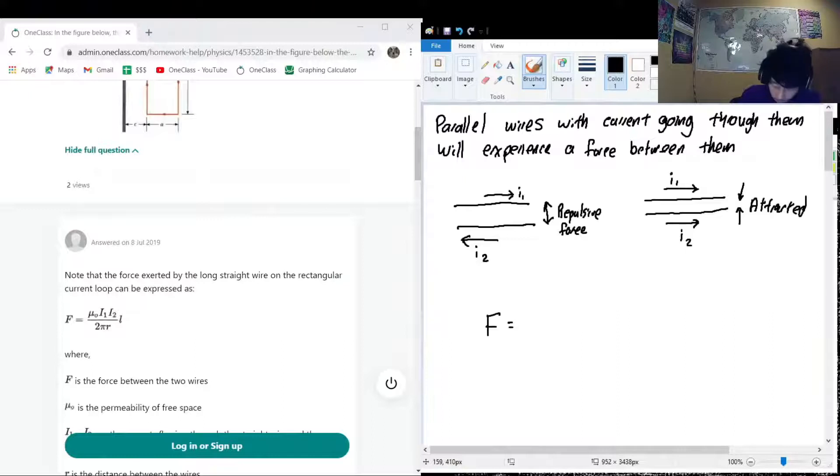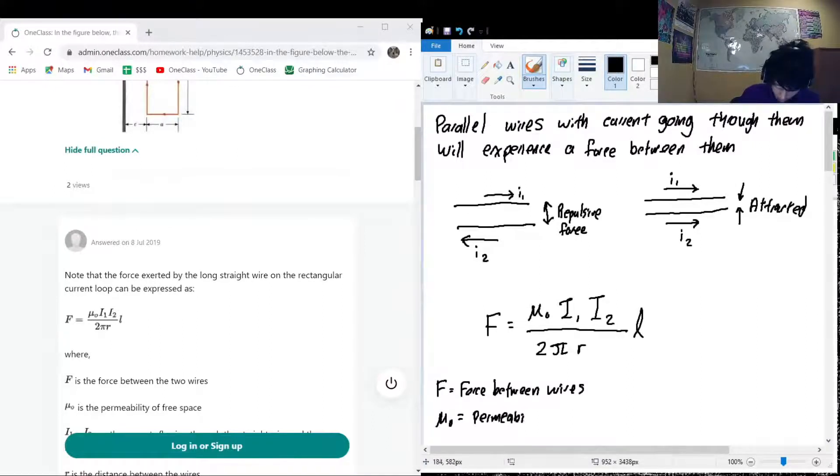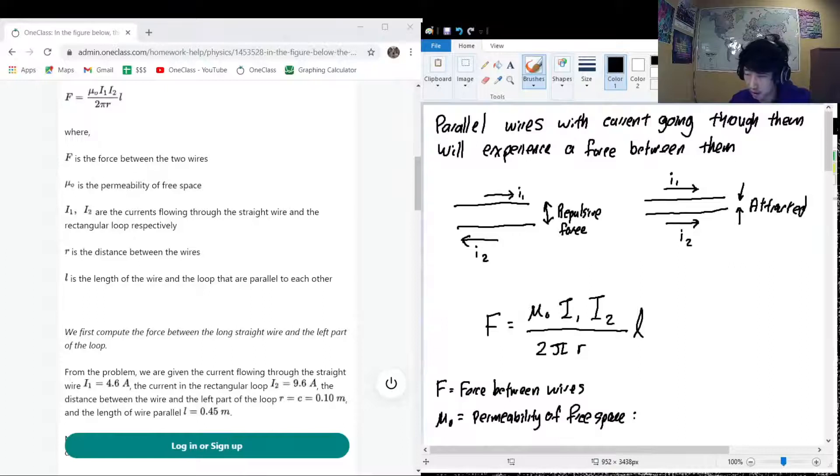The force between the wires is going to be mu naught multiplied by current one multiplied by current two, and that's all divided by two pi r, and you also multiply that by l. So what do these things mean? F is the force between wires. Mu naught is permeability of free space, and what is this equal to? We have a numerical value, this is just a numerical constant in the equation, so that's going to be 1.26 times 10 to the negative 6.